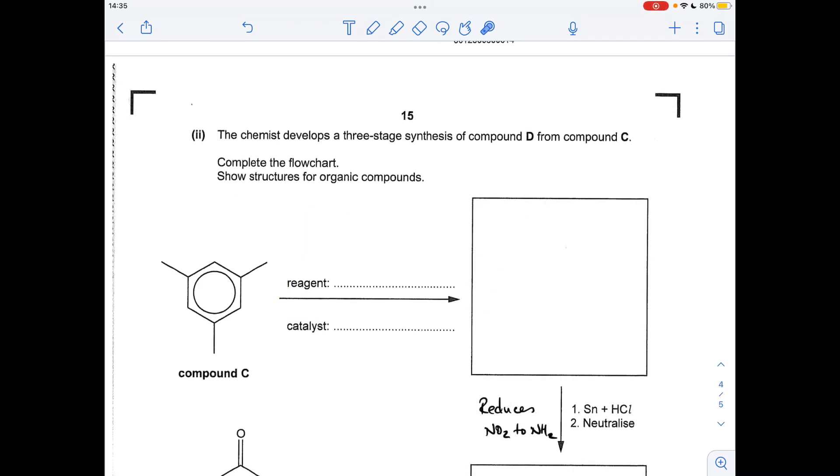Finishing off with the flow chart now. You'll notice I've written up here the Sn and HCl mixture reduces the NO2 group to an NH2 group. So that's basically telling us that we need an NO2 in this molecule here and we're going to have an NH2 down here. So that's the structure of the compound for that box there. To make that happen we need to react compound C with nitric acid and we need a catalyst of sulfuric acid.